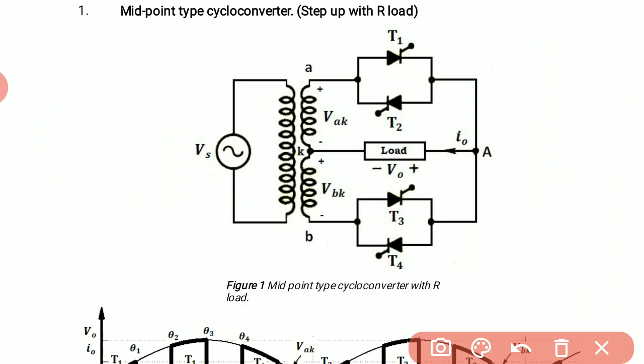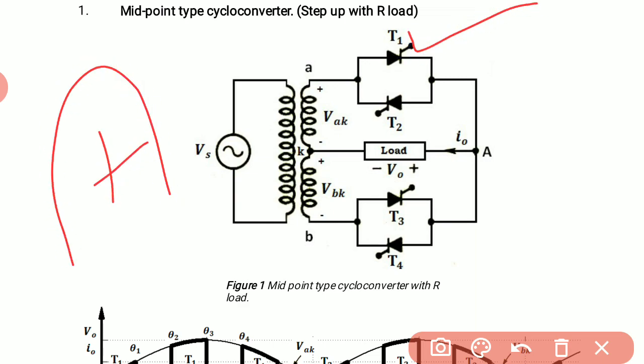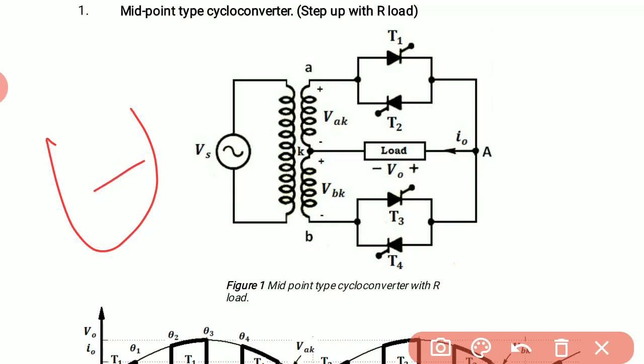In this cycloconverter we use a center-tap transformer whose inner winding has a center tap point called K, through which the load is connected. This cycloconverter has four thyristors: T1, T2, T3, and T4. For the positive half cycle, thyristors T1 and T4 will work, and for the negative half cycle, thyristors T2 and T3 will work.